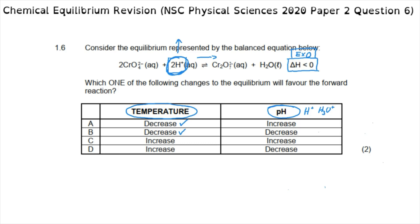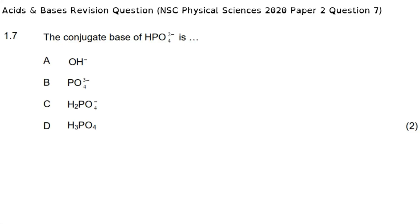By Le Chatelier's principle, increasing the concentration of a reactant favors the forward reaction. Increasing hydrogen ion concentration makes the solution more acidic, which decreases the pH — moving it away from seven toward zero. So decreasing the temperature favors the exothermic forward reaction, and decreasing the pH adds more hydrogen ions, also favoring the forward reaction. The correct answer is option B.